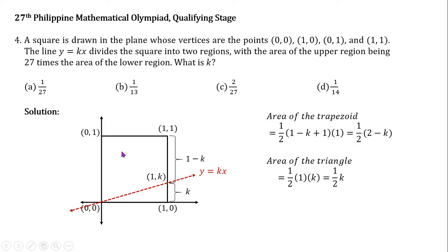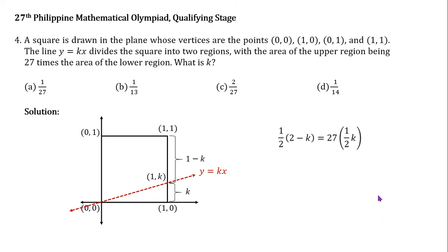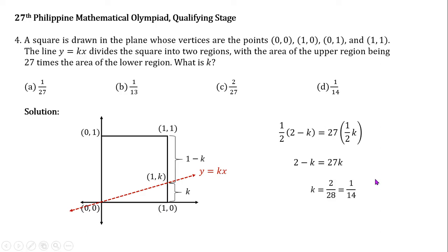The problem states that the upper region is 27 times the lower region. So we create the equation: one half times (2 minus k) equals 27 times one half k. Multiplying both sides by 2 gives 2 minus k equals 27k. Combining like terms, we get k equals 1 over 14. So the answer is letter D.